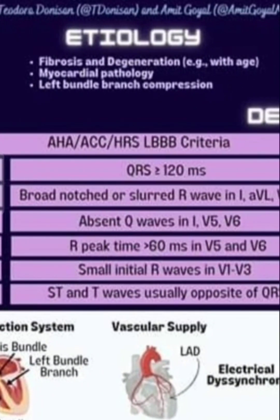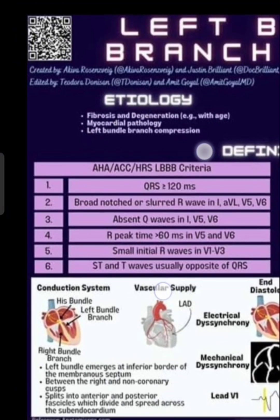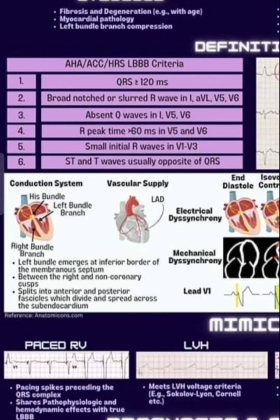Left bundle branch block (LBBB) causes include fibrosis and degeneration (e.g., with age), myocardial pathology, and left bundle branch compression. The criteria for LBBB are: QRS greater than or equal to 120 milliseconds, broad notched or slurred R wave in leads I, aVL, V5, and V6, absent Q waves in leads I, V5, and V6, R peak time more than 60 milliseconds in V5 and V6, and small initial R wave in V1 to V3.